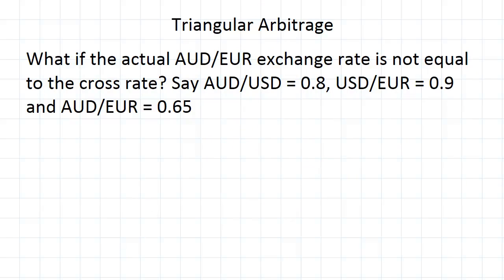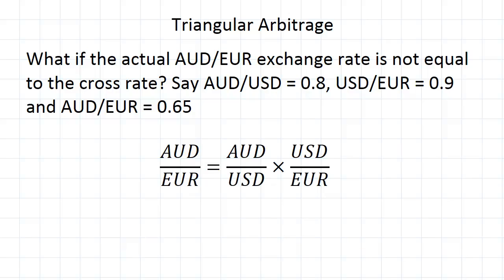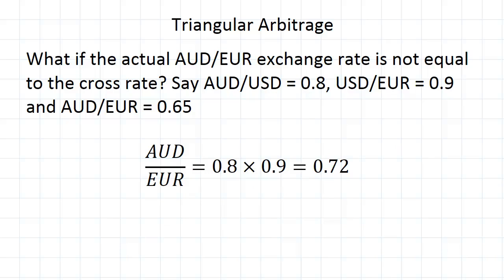So let's say the Australian dollar and US dollar exchange rate is 0.8, the US dollar and euro exchange rate is 0.9, and the Australian dollar and euro exchange rate is 0.65. Now if we look at our cross rate for the Australian dollar and the euro, we get 0.8 times 0.9, which gives us 0.72. Obviously this is not the same as the actual rate. So what is the problem here? Well, it opens up a certain opportunity.